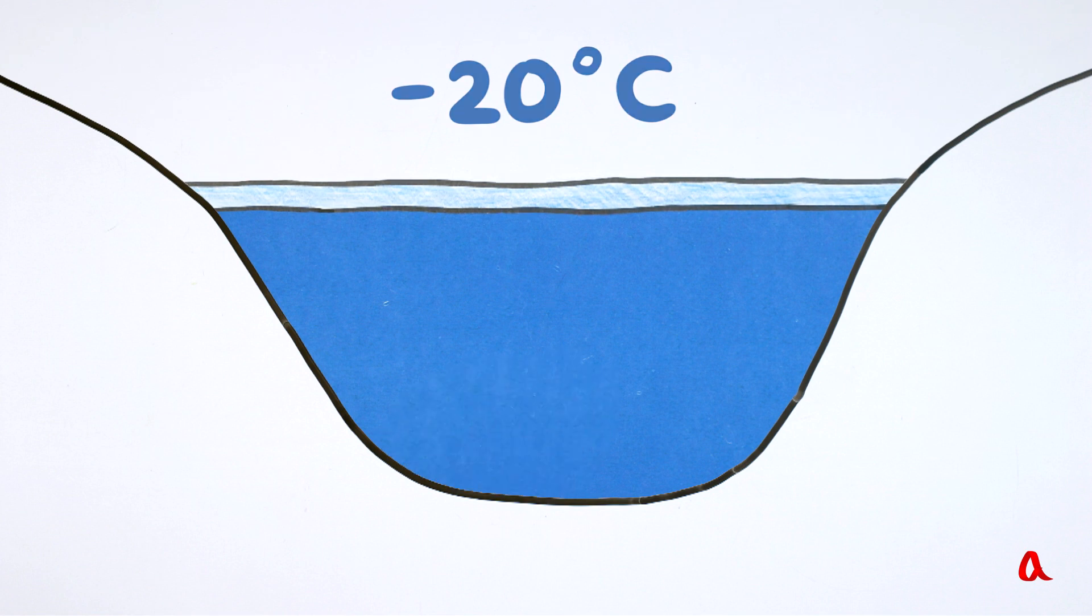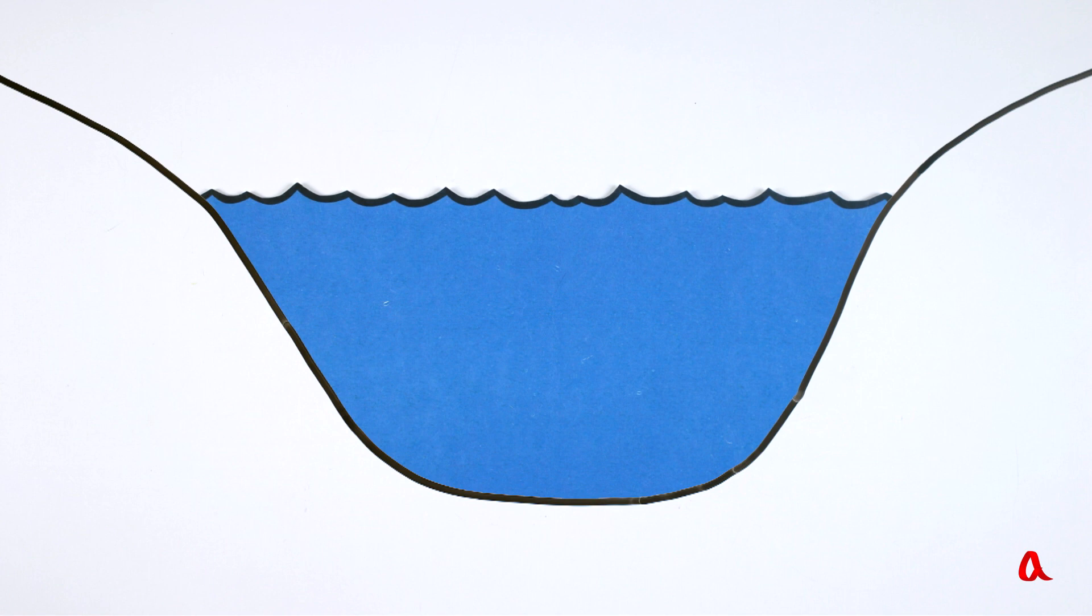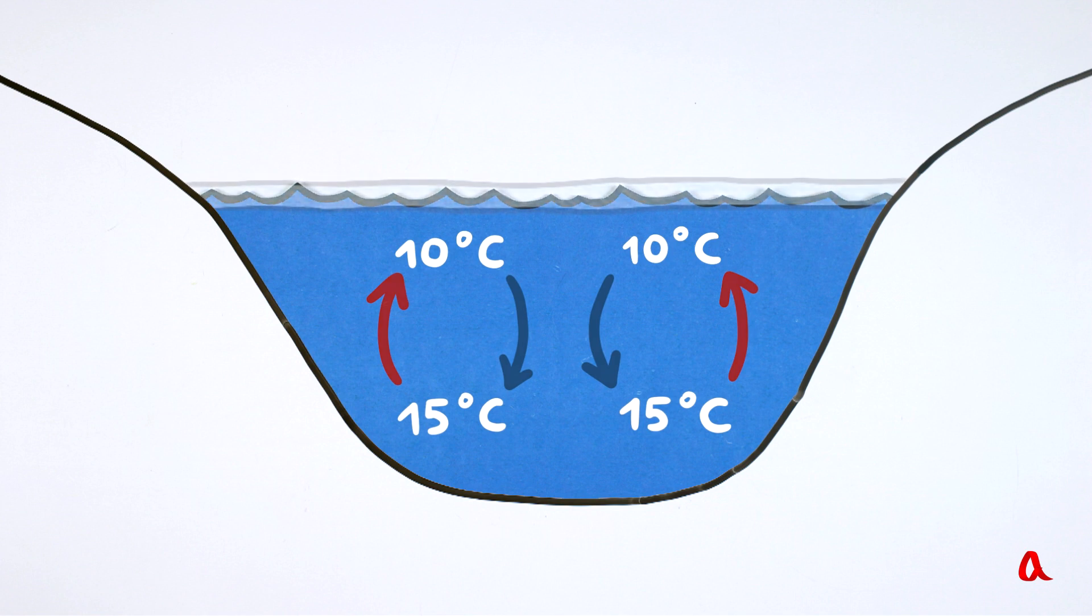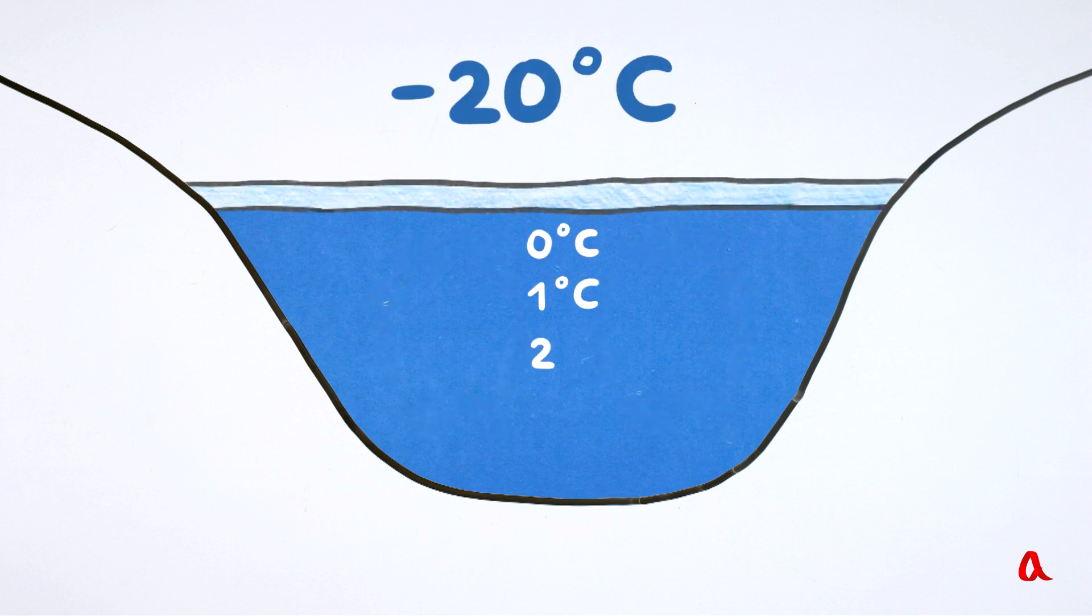And one more thing. While the water in the lake is warmer than 4 degrees, the part of it which is cooled down on the surface moves downwards, ousting the warmer one upwards. So the water in the lake gets mixed. But when all the water cools down to 4 degrees, the mixing stops and the water continues cooling down slowly just as a result of its thermal conductivity, until spring comes.